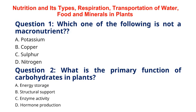Explanation: Copper is a micronutrient required in small quantities by plants for various metabolic processes. Macronutrients are nutrients required in larger amounts by plants for growth and development. Examples of macronutrients include nitrogen, phosphorus, potassium, sulfur, calcium, and magnesium.